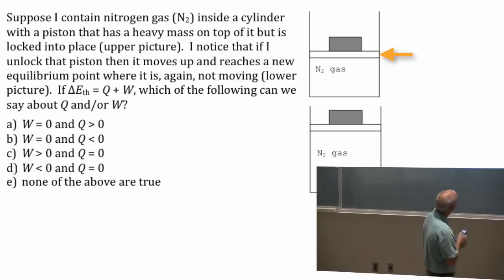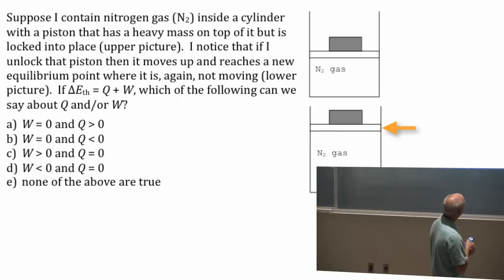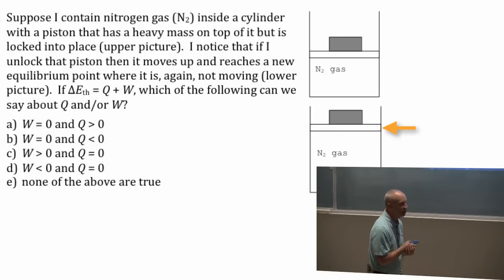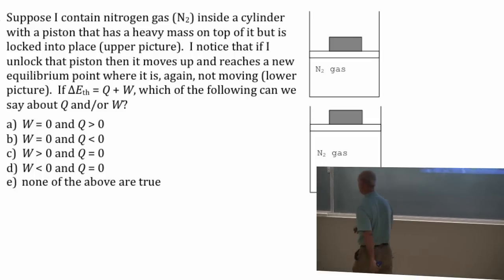Same thing, lock it here, release the lock, piston moves up to here. Remember the thermal energy, the nitrogen gas went down. I notice if I unlock the piston, the piston moves up to a new equilibrium point. And again, it's not moving. I'm saying delta E thermal is Q plus W.